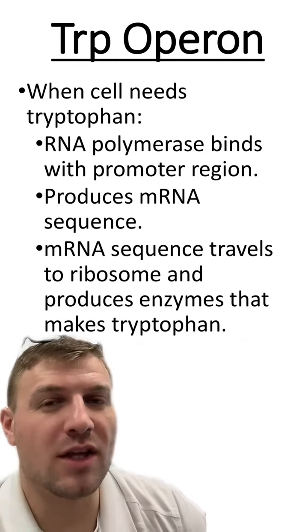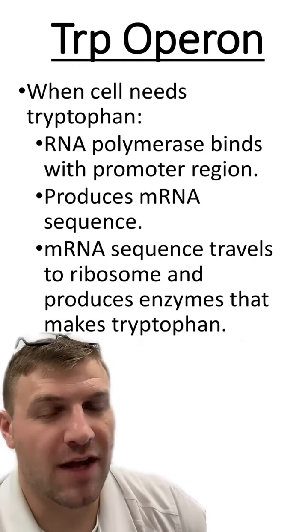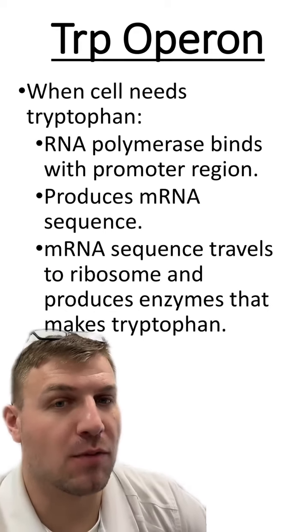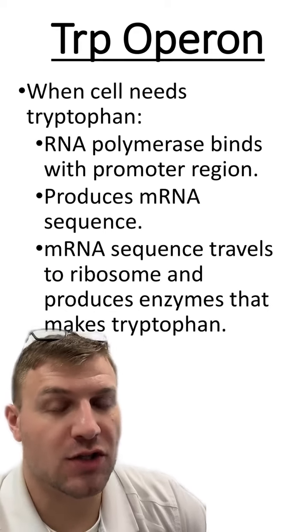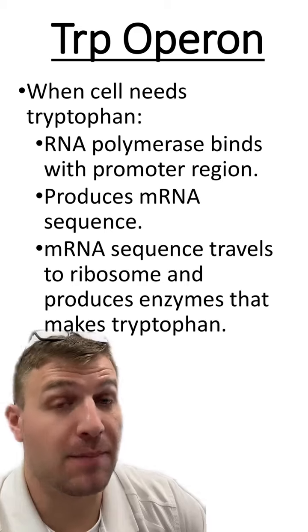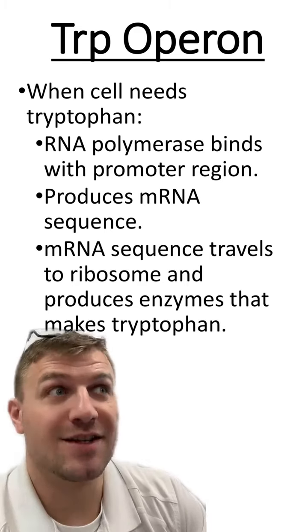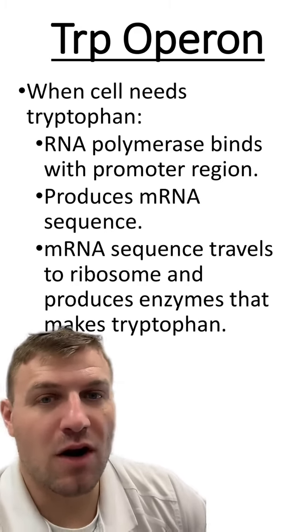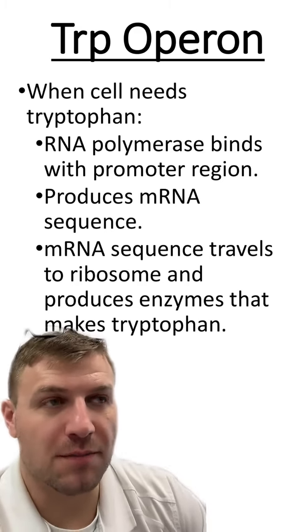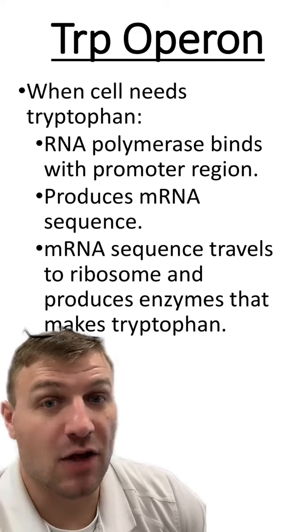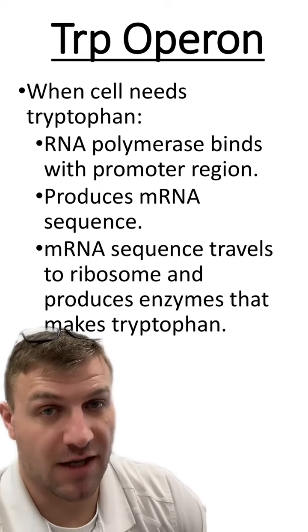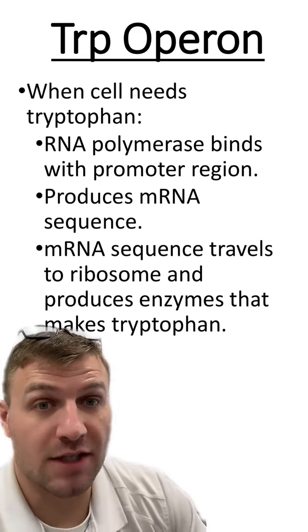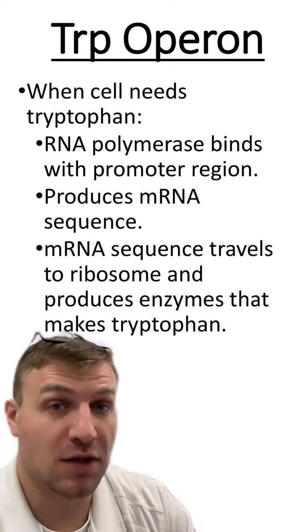Whenever the cell needs tryptophan, RNA polymerase is going to bind to the promoter region and transcribe the genes to make proteins that produce tryptophan. So when there are low levels of tryptophan, the cell needs to make tryptophan, and RNA polymerase will make proteins to do that.